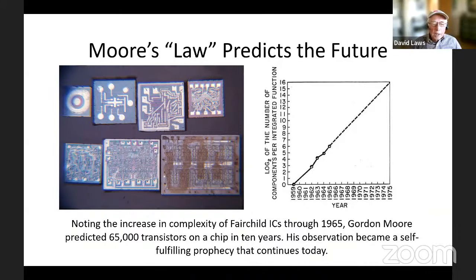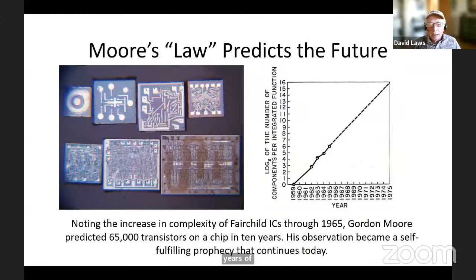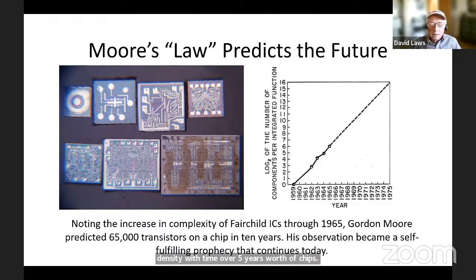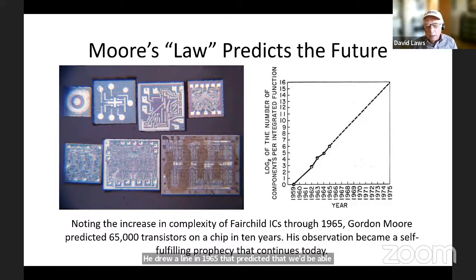Gordon Moore at Fairchild, looking at several years of chips, realized there was a significant increase in complexity being built into each chip over the years. Plotting the increase in density over five years, he drew a line in 1965 that predicted we'd be able to get 65,000 transistors on a chip within 10 years. His observation became a self-fulfilling prophecy that continues today.